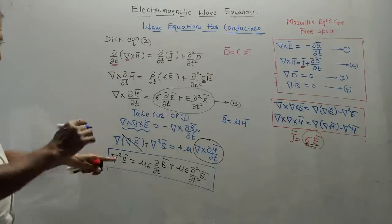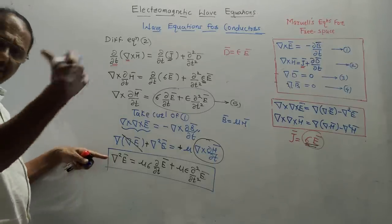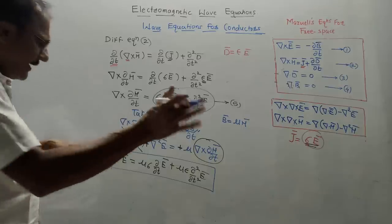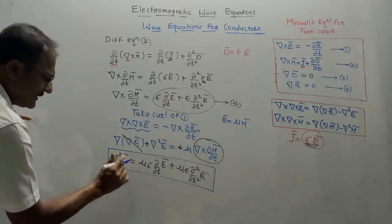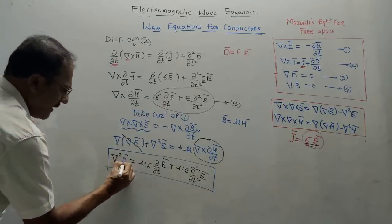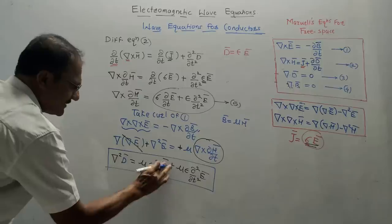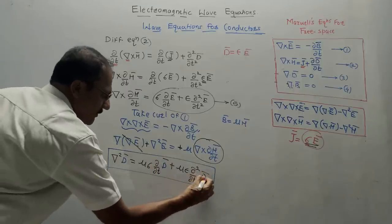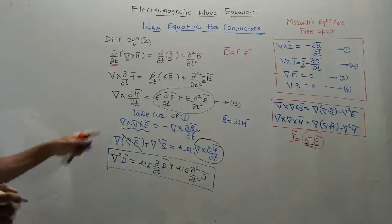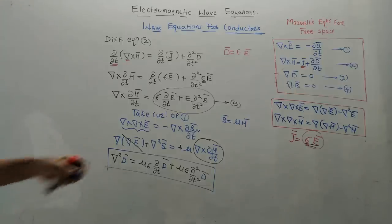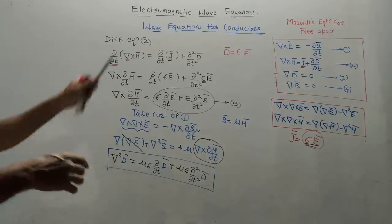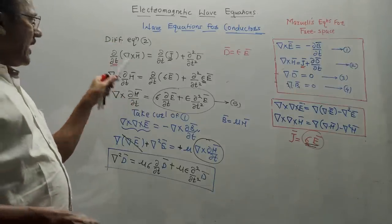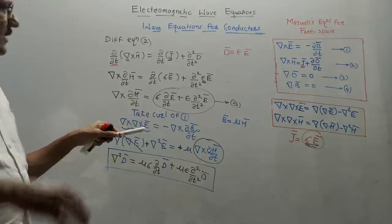To generate the wave equation in terms of D̄, simply replace Ē with D̄ in the conductor equation — the same trick as before. This is the second wave equation for conductors in terms of D̄.